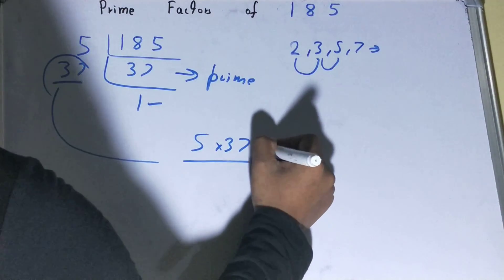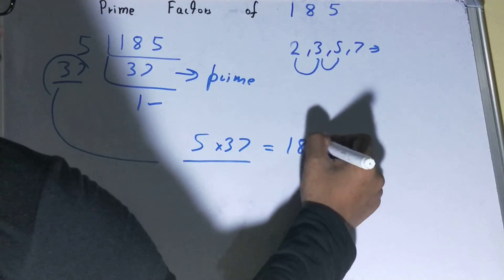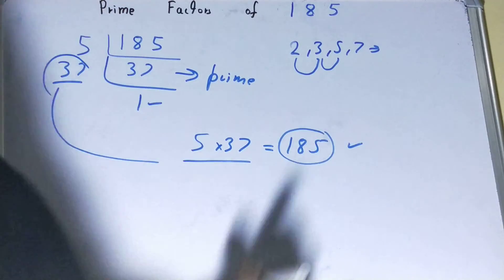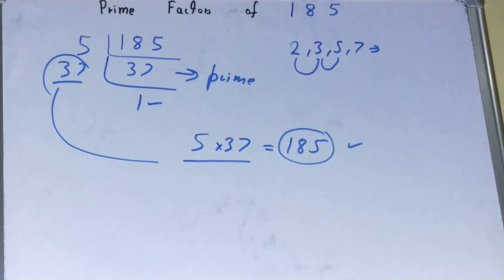to confirm whether it is right or not, you can multiply them, and if on multiplying you have the number back again, that means your calculation is correct. If not, you need to recheck. So this was all about prime